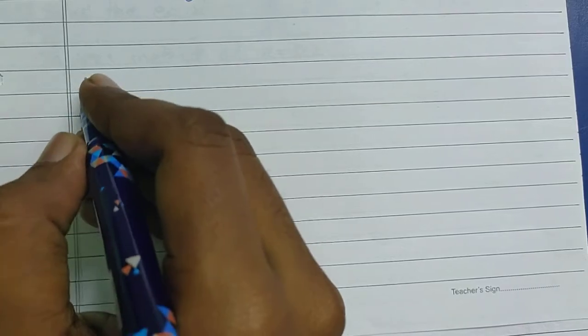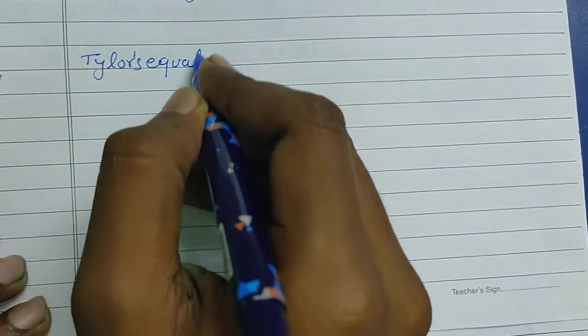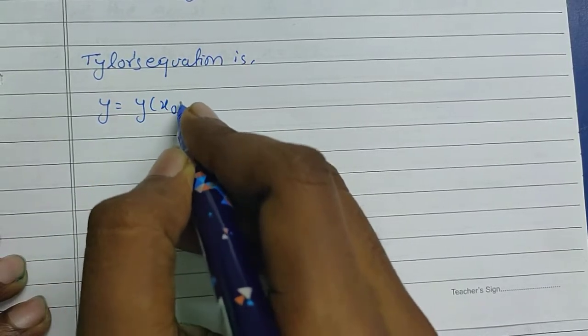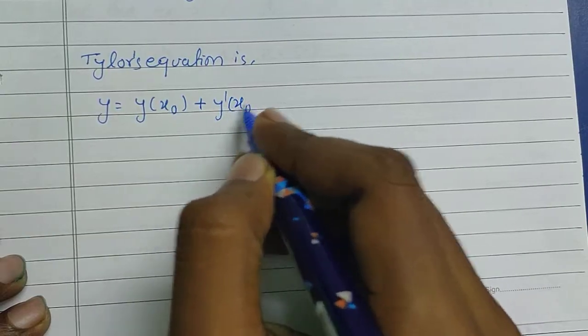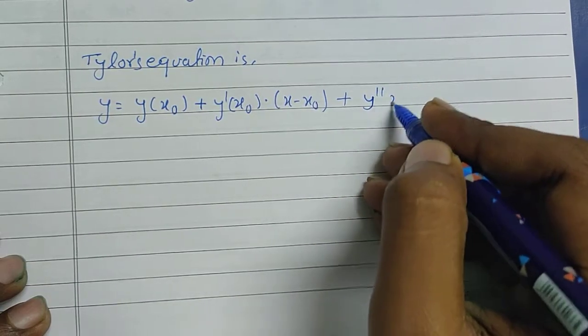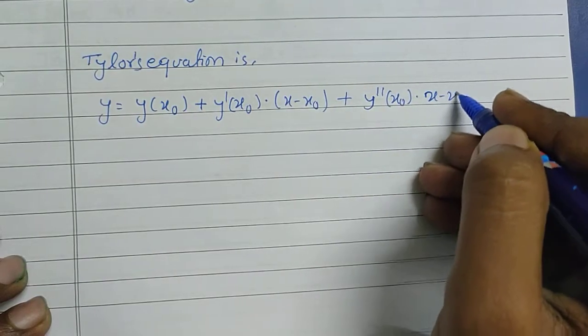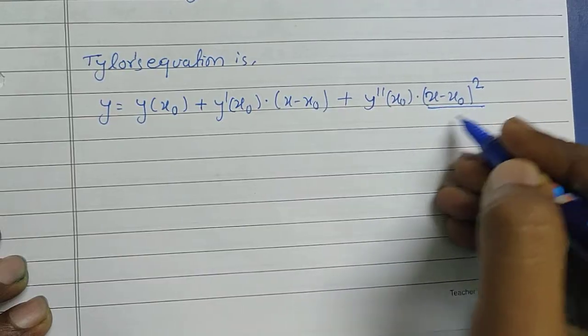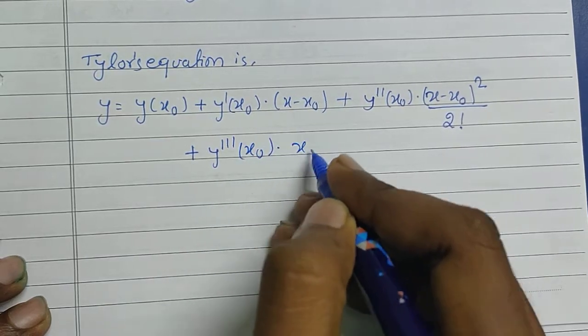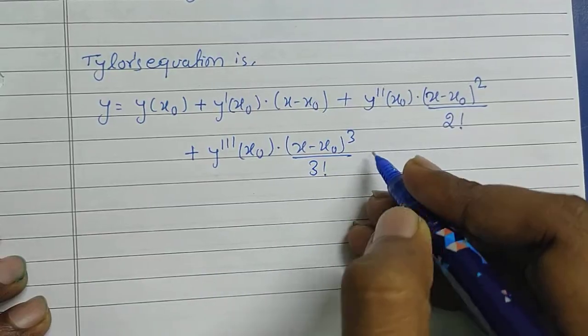For solving the equation by Taylor's method, one must know Taylor's equation, which is given as: y = y(x₀) + y'(x₀)(x − x₀) + y''(x₀)(x − x₀)² / 2! + y'''(x₀)(x − x₀)³ / 3!.